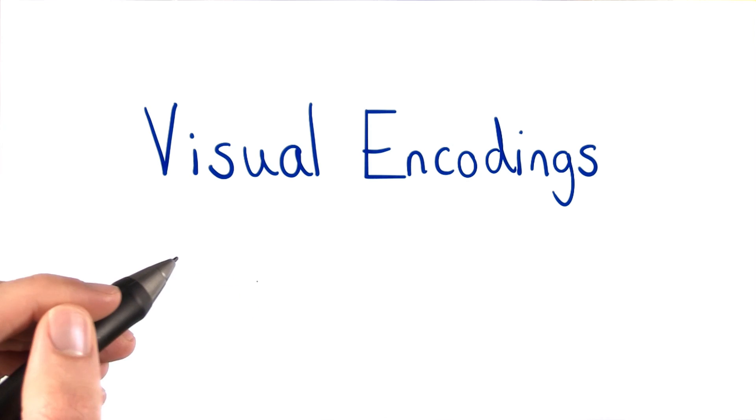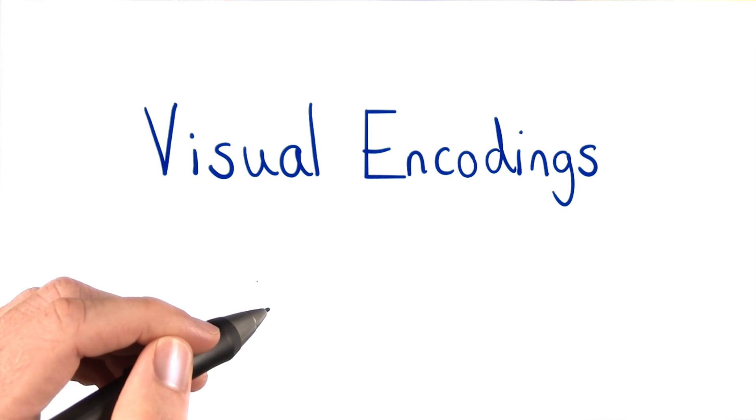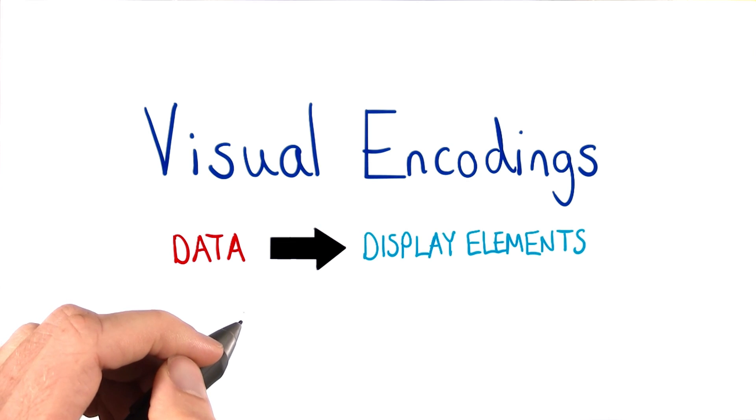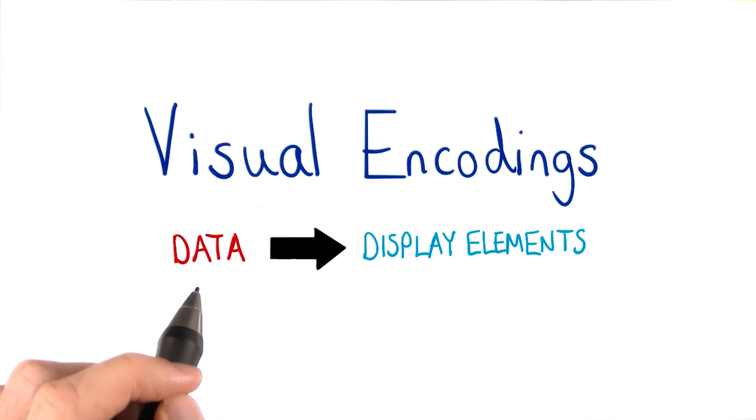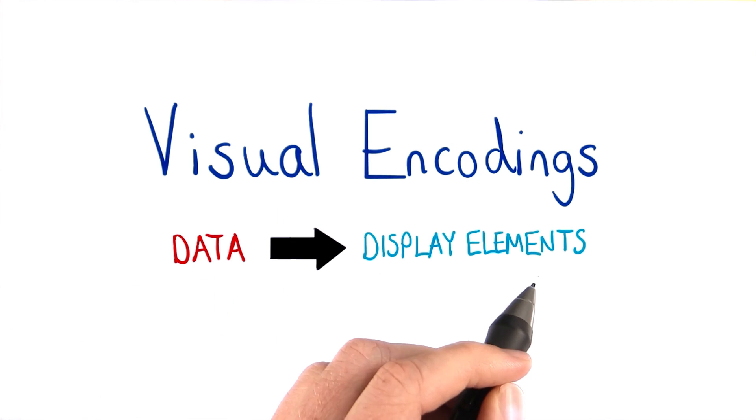Now that you've been introduced to data types, let's look at the many options of visual encodings that we have. Simply put, visual encodings are a mapping from data to display elements.